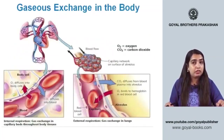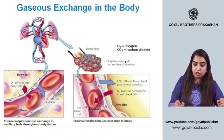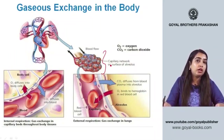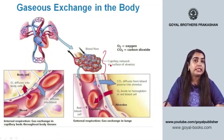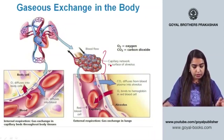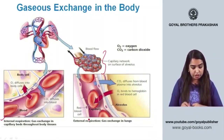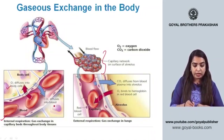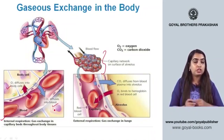For gaseous exchange in the body, a picture of an alveolus shows the capillary network. This depicts internal respiration — gas exchange in capillary beds throughout body tissues — showing how O2 diffuses into body cells and CO2 diffuses into the blood.